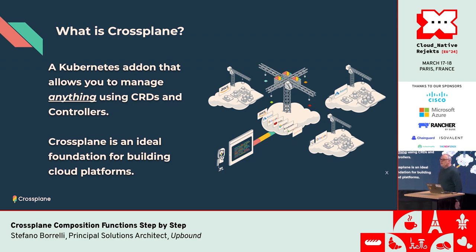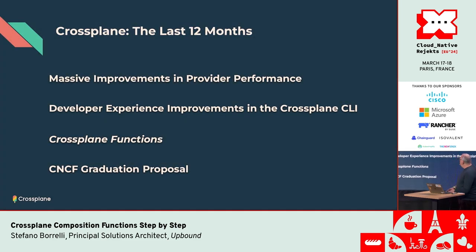Just a basic introduction: Crossplane is an extension of Kubernetes that allows you to manage anything. It's really ideal for folks who are building internal cloud platforms, given all the abstractions it provides. In the last 12 months, the project has had incredible growth and maturity. The first thing we saw coming last fall was massive provider improvements, allowing us to scale to tens of thousands of managed resources - a big breakthrough for our largest users.